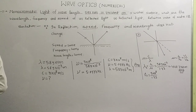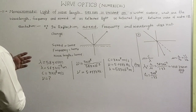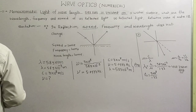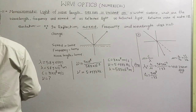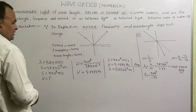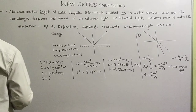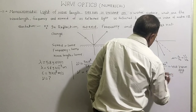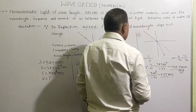The velocity also changes. V₂ = V₁/μ = 3×10⁸ divided by 1.33, which gives us 2.255×10⁸ meter per second. We can also calculate velocity using the formula: velocity = wavelength × frequency. So the velocity and wavelength in the second medium are both calculated.